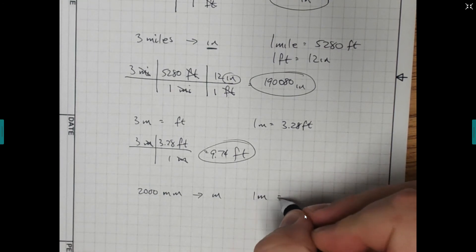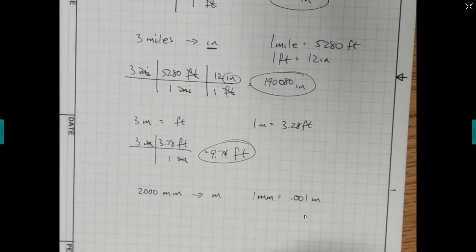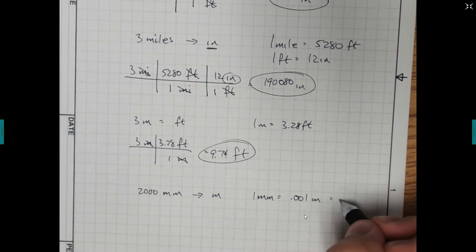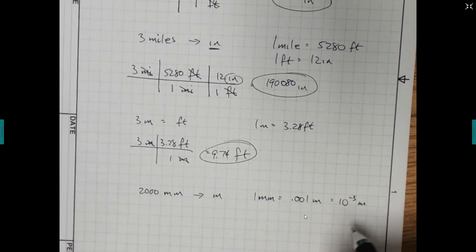So 1 millimeter is equal to 0.001 meters. That's what that milli means. This is equal to 10 to the negative 3 meters. So it doesn't matter which one of those things you use.